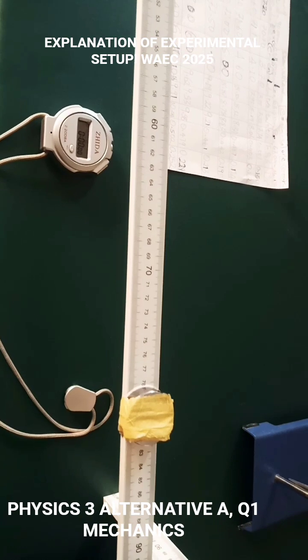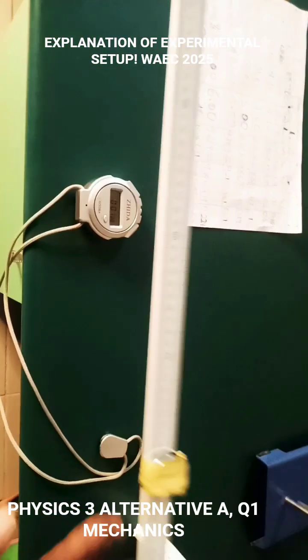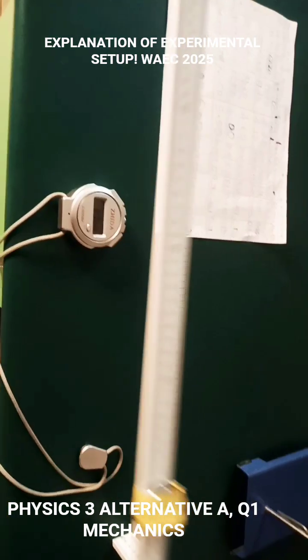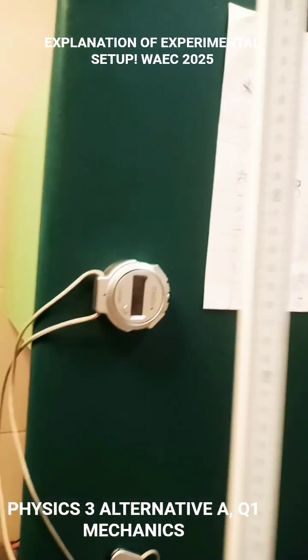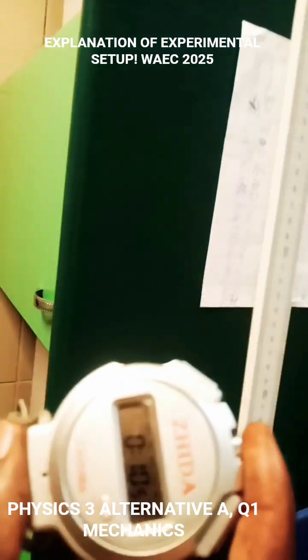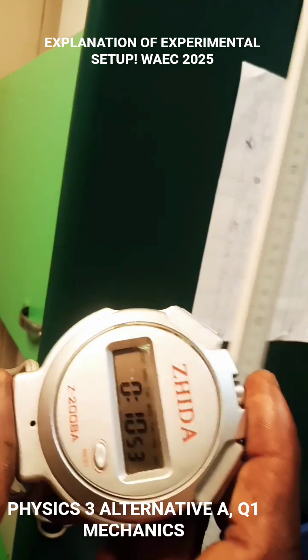So let's try to find the time taken for 20 complete oscillations. 1, 2, 3, 4, 5, 6, 7, 8, 9, 10, 11, 12, 13, 14, 15, 16, 17, 18, 19, 20. So we got that.